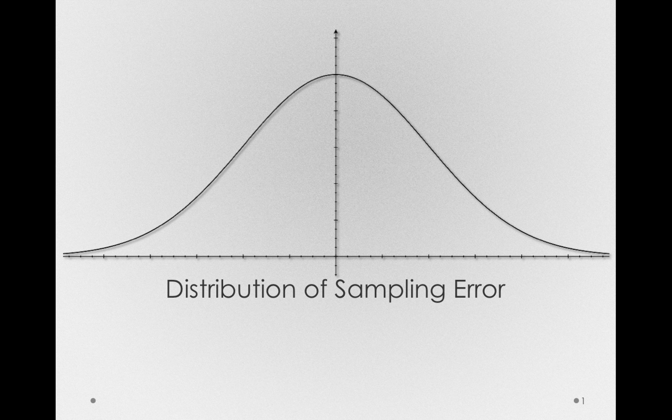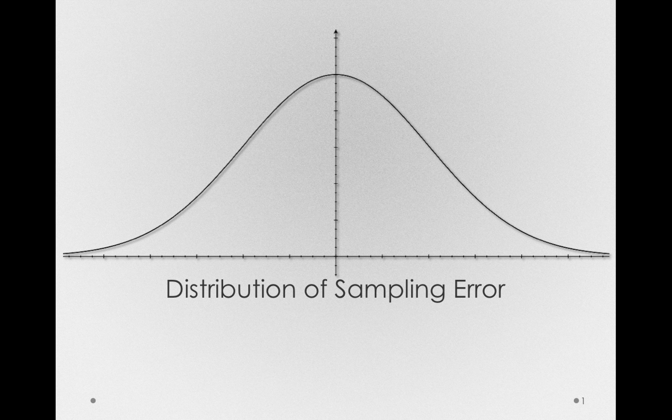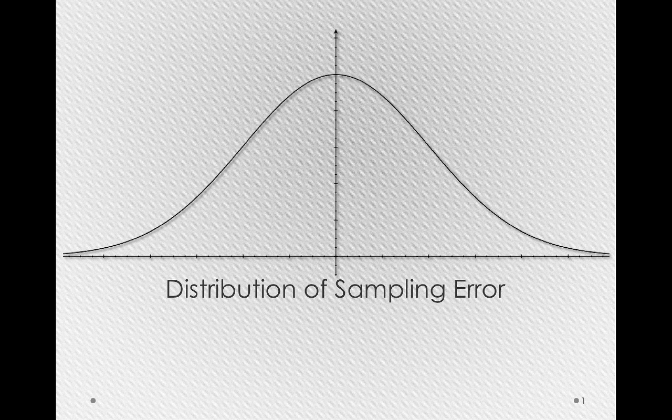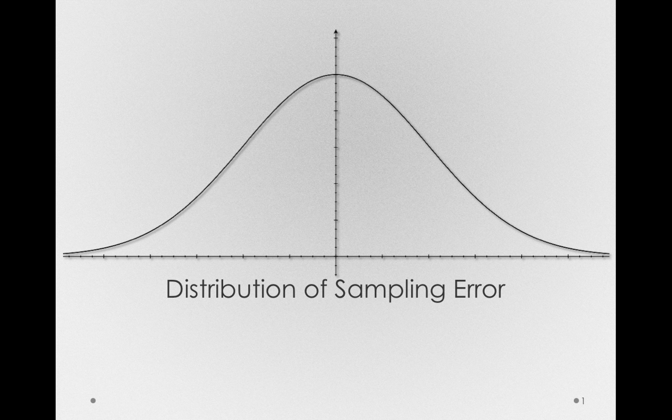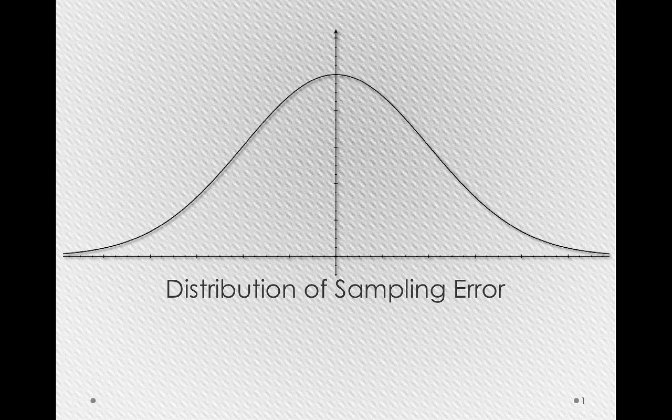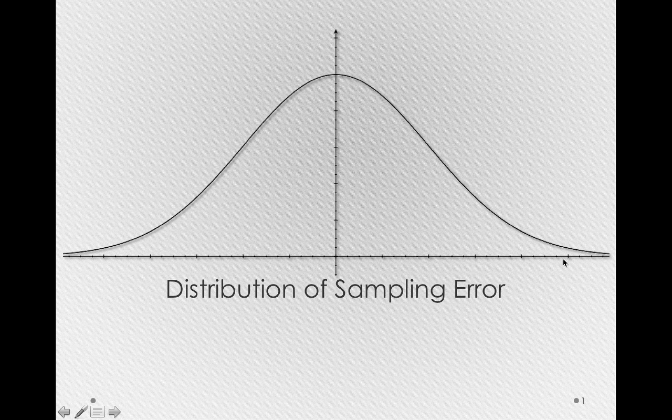We know a lot about the distribution we call normal, that is, we know a lot about its proportionality, and because of this, we would be able to make very specific statements if, for instance, we knew that we got a sample that was in one of the extreme tails.